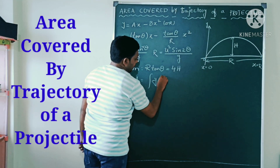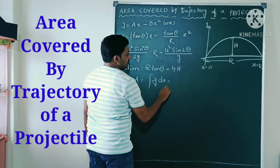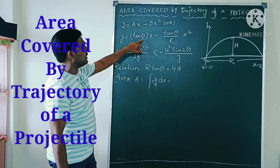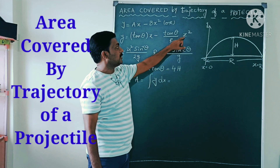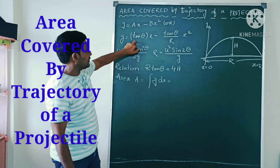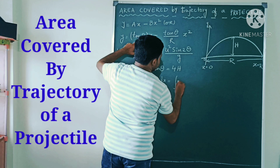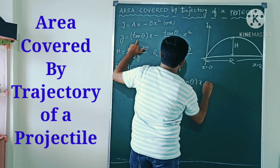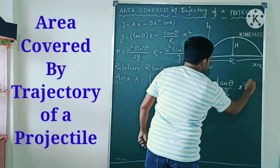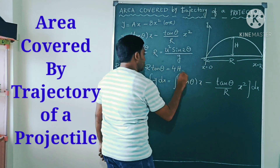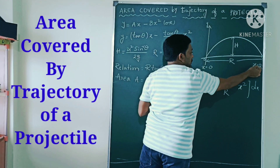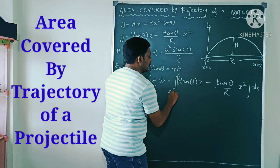Area is equal to the integral of y dx. The trajectory equation y can be written in two ways: ax minus bx squared, or tan θ · x minus (tan θ / R) · x squared. I will take that second equation: integral of [tan θ · x minus (tan θ / R) · x²] dx, with limits of x from 0 to R.